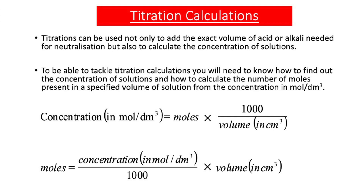In our previous videos, we've seen that titrations can be used not only to add the exact volume of acid or alkali needed for neutralisation, but also to calculate the concentration of solutions. To tackle titration calculations, you need to know how to find the concentration of solutions and calculate the number of moles present in a specified volume of solution from the concentration in mol dm⁻³. The two equations you need to learn are: concentration (mol dm⁻³) = moles × 1000 ÷ volume (cm³), and moles = concentration ÷ 1000 × volume (cm³).